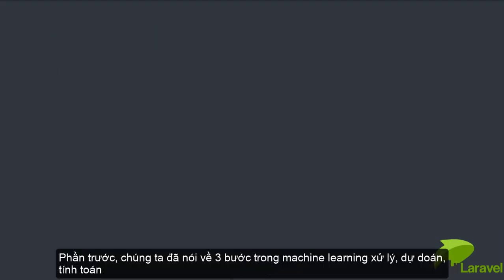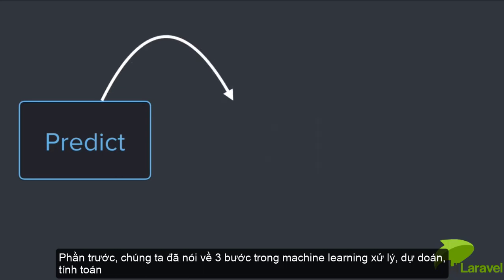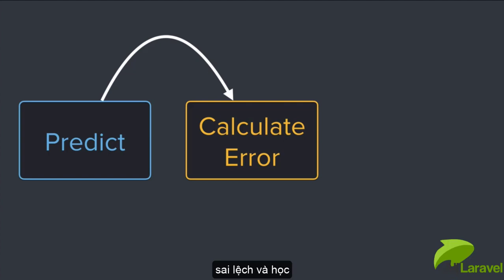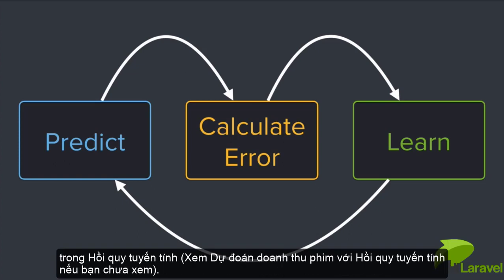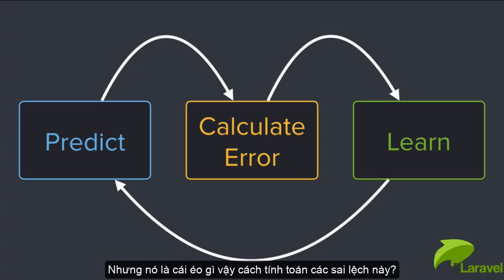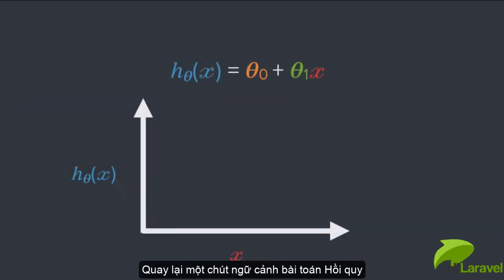All right, so previously, we've talked about the famous three-step machine learning process. Predict, calculate the error, and learn. Now, the middle step is something that involved calculating an error. And I glossed over that part in the last lesson. So what does that mean, and how do we calculate the error exactly? So to provide a little bit of context, let's briefly revisit something that we talked about with linear regression, right?